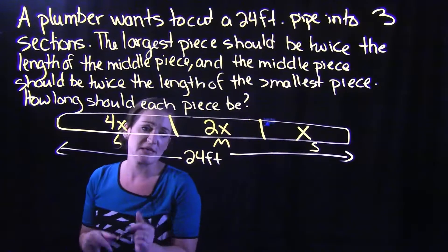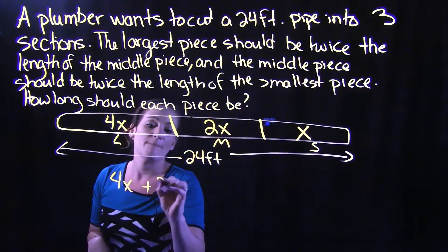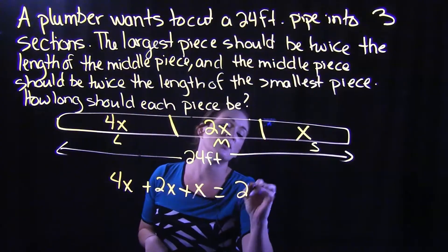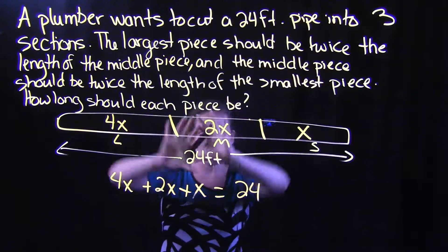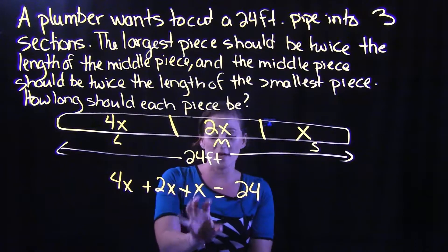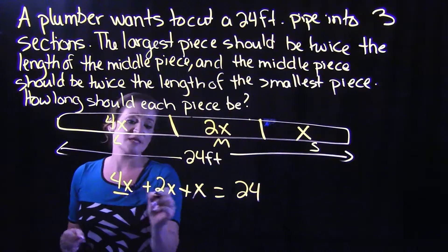So what I'm going to do is I'm going to say 4X plus 2X plus X is going to equal a total of 24. So all of these pieces together equal 24. Now this is the equation that we're going to want to solve.